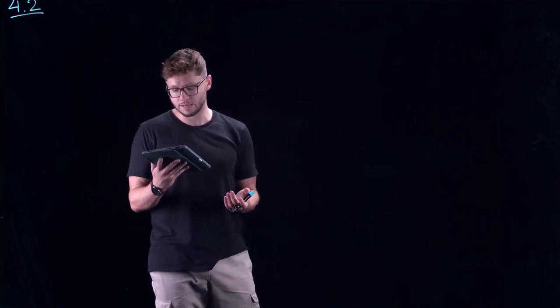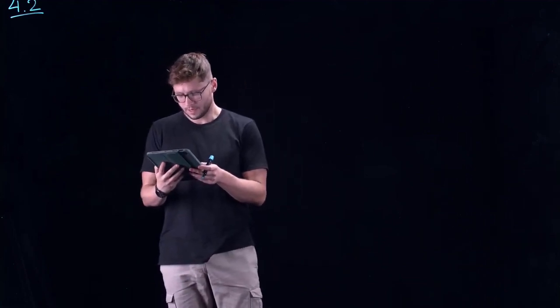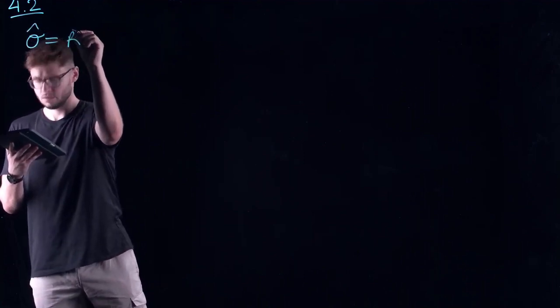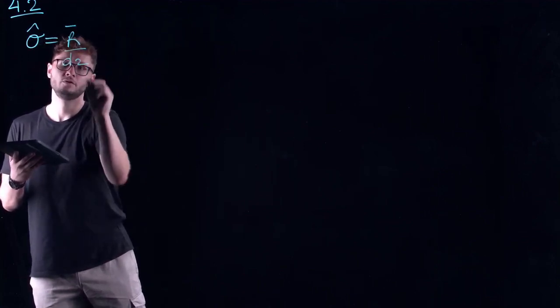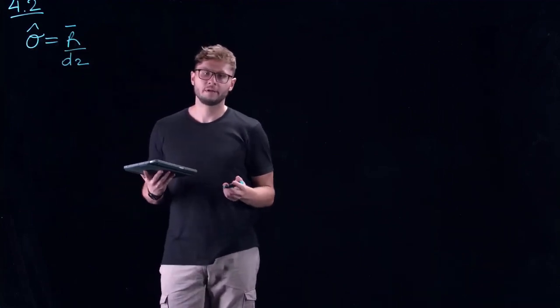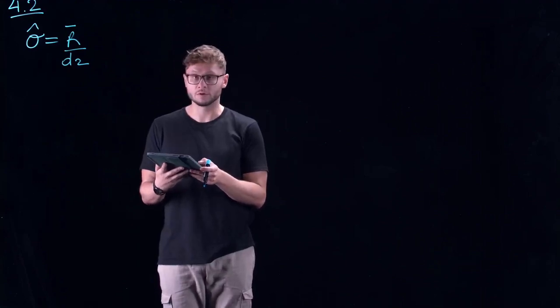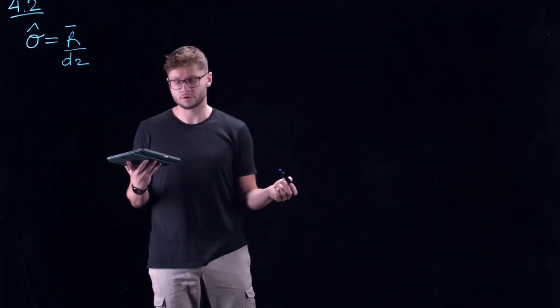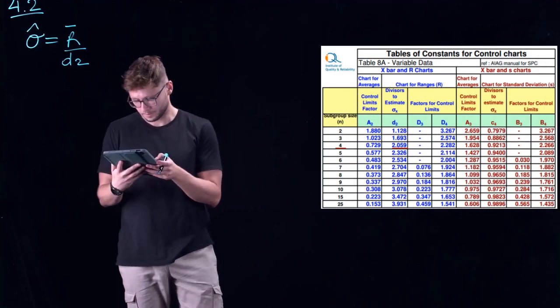For question 4.2, they ask us to estimate the process standard deviation of the beam production process. Here we need to use the formula for finding the process standard deviation, as well as the table for control chart constants. The formula for finding the process standard deviation is sigma equals R bar divided by D2.